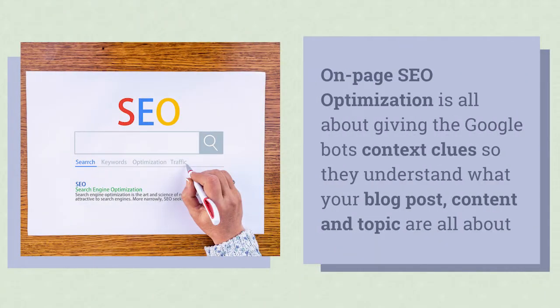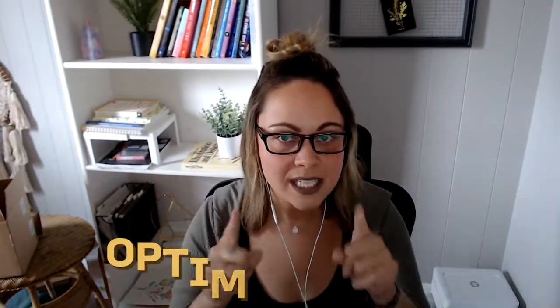You're not even going to be considered for page one because Google is confused about what you're trying to show up for. On-page SEO optimization is all about giving the Google bots context clues so it understands what your blog post and your content and topic is all about. Because if Google and the bots are confused, you can do all of the off-page SEO things like guest posting and backlinks, but it's not going to work because you're not in the right section of the filing cabinet in Google's index.